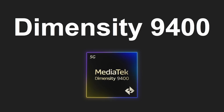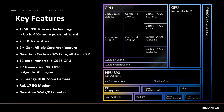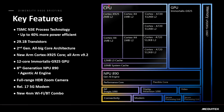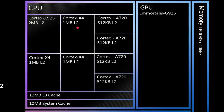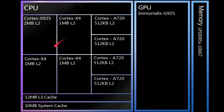So the Dimensity 9400, the new processor from MediaTek. Here is a block diagram — there's lots of information on this slide so we're going to go through it. Starting on the right-hand side, for the CPU we've got an octa-core setup. We've got a Cortex-X925 as the primary core with two megabytes of L2 cache.